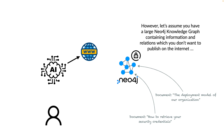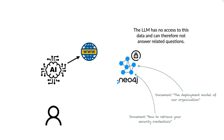However, let's assume you have a large Neo4j knowledge graph containing information and relationships which you don't want to publish on the internet, and therefore the LLM cannot be trained on this data. For example, we have a Neo4j knowledge graph containing documents like the deployment model of our organization and how to retrieve your security credentials. The LLM has no access to this data and therefore cannot answer related questions.